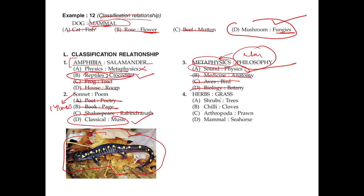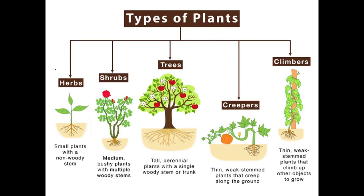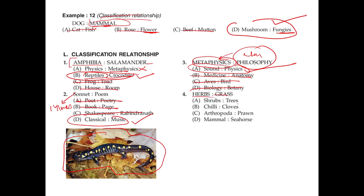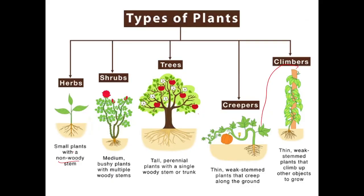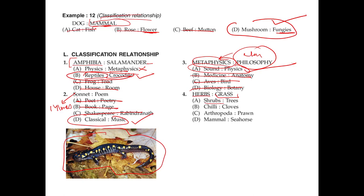Now for plant classifications: herbs are small plants with non-woody stems, shrubs are medium bushy plants with a little woody stem, and trees are tall with heavy stems. Creepers and climbers also exist. Herbs classification includes grass, coriander leaves, pudina leaves, and similar plants. Chili and gloves have no relationship. Mammal and seahorse: seahorse is a sea creature, not a mammal — that's wrong. Arthropoda and prawns: arthropods are animals with calcium shells, and prawns are one of them — this is the right answer.